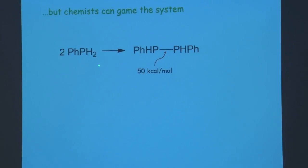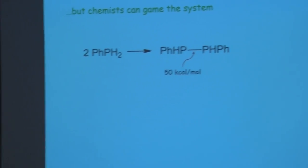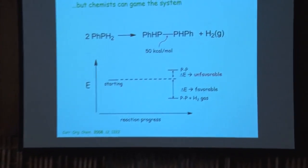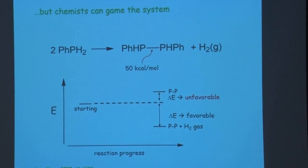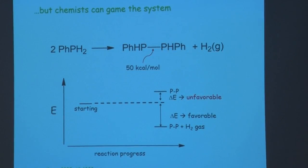Chemists can game the system. A reaction we like in my group is phosphine dehydrocoupling, where we build chemical bonds between phosphorus. We take organophosphorus molecules and make a phosphorus-phosphorus bond. The problem is that this is a weak bond — about 50 kcal/mol — so it's not very favorable to make. But we generate hydrogen as a byproduct, which has the strongest sigma bond among molecules. By coupling the two processes, we can convert an unfavorable reaction into a favorable one.